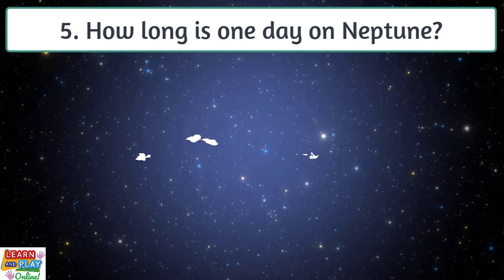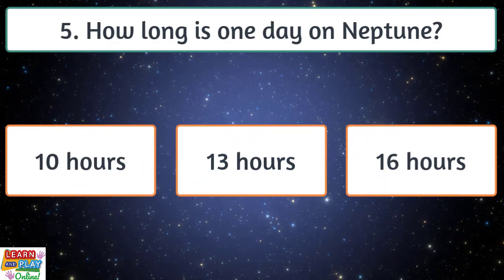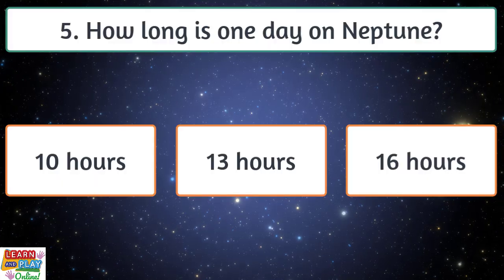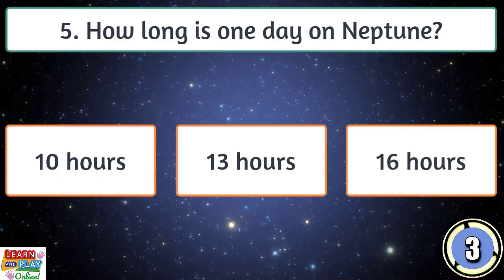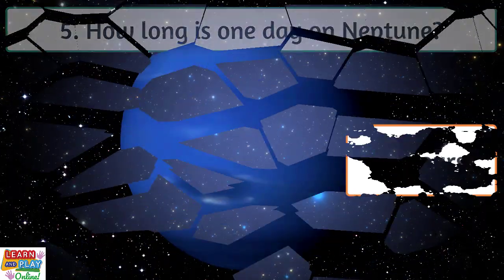Question five. How long is one day on Neptune? 10 hours, 13 hours, or 16 hours? One day on Neptune is shorter than that on Earth, as it only takes Neptune around 16 hours to make a complete spin.